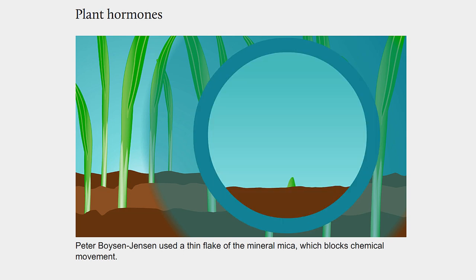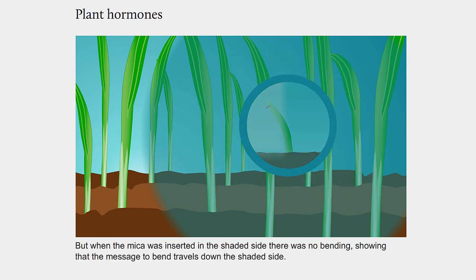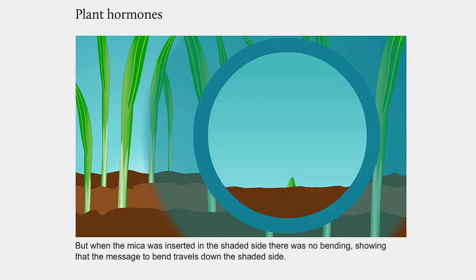Peter Boysen Jensen used a thin flake of the mineral mica, which blocks chemical movement. When it was inserted in the illuminated side, bending occurred normally. But when the mica was inserted in the shaded side, there was no bending, showing that the message to bend travels down the shaded side.